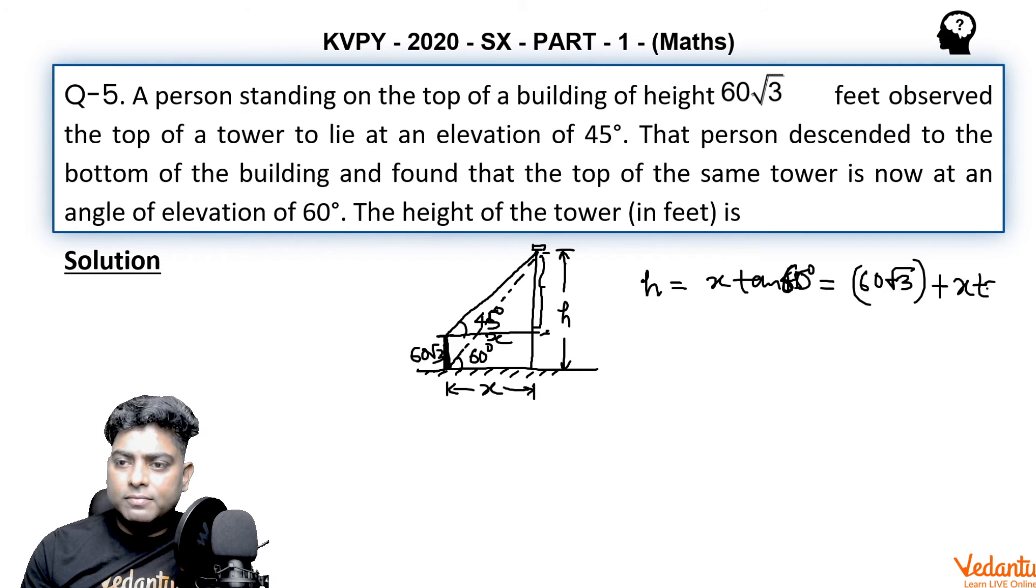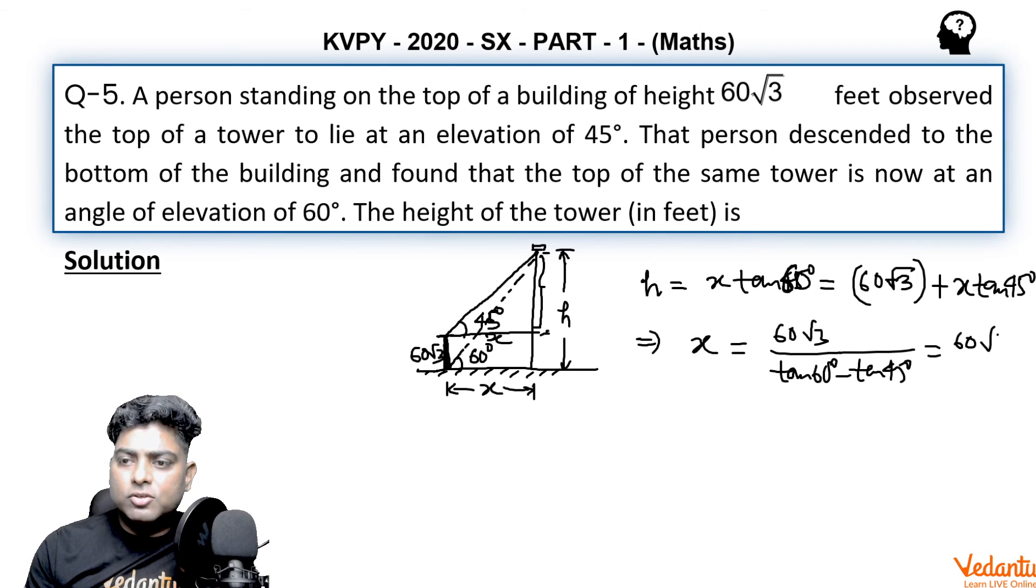If you solve this for x first, x will be 60√3 upon (tan 60 - tan 45), that is 60√3 upon (√3 - 1), and that is nothing but 60√3.